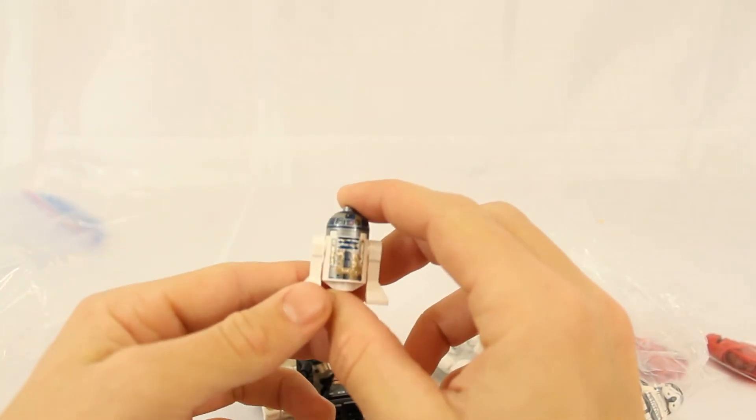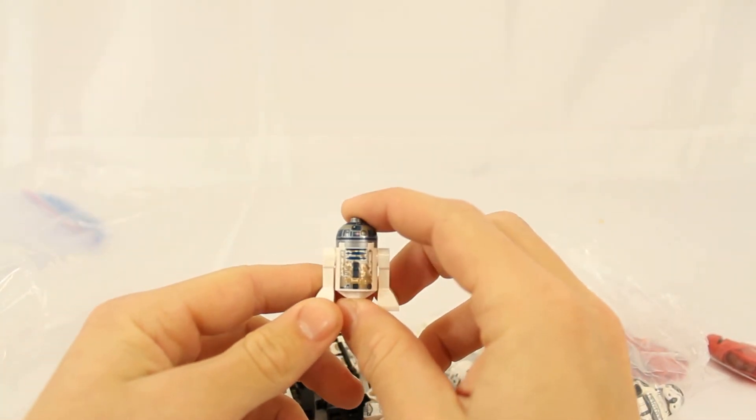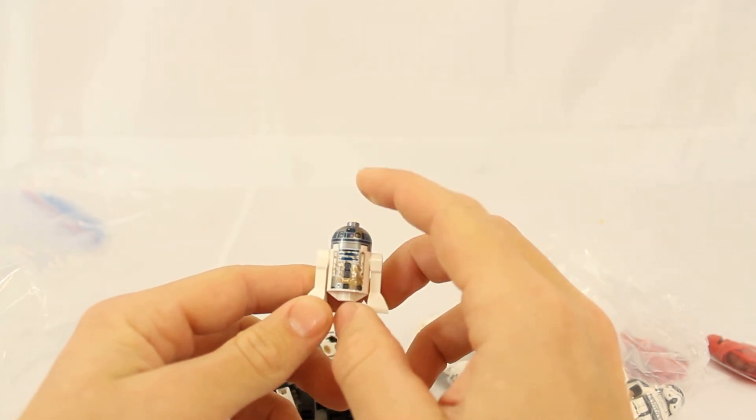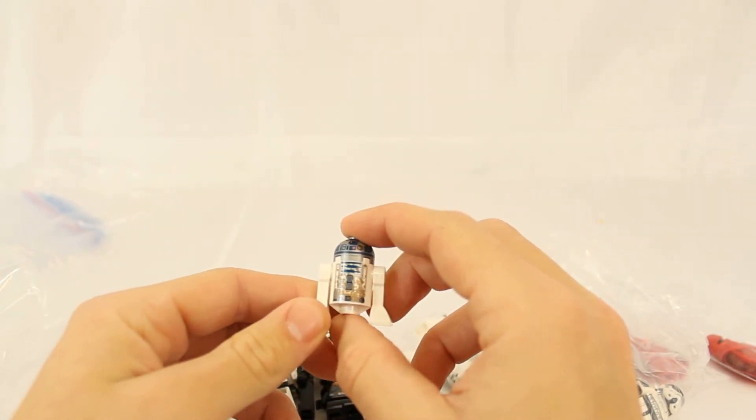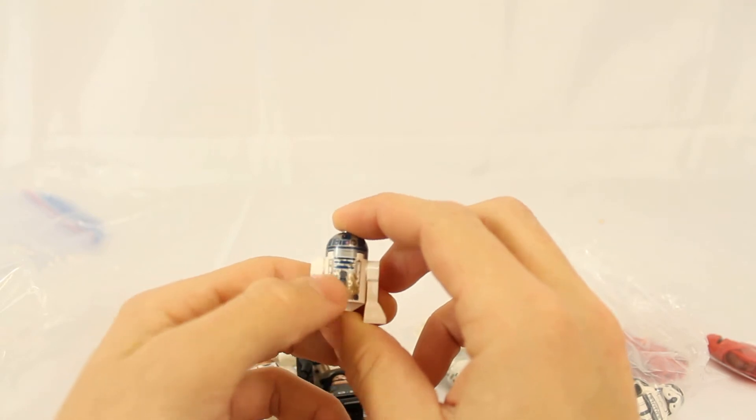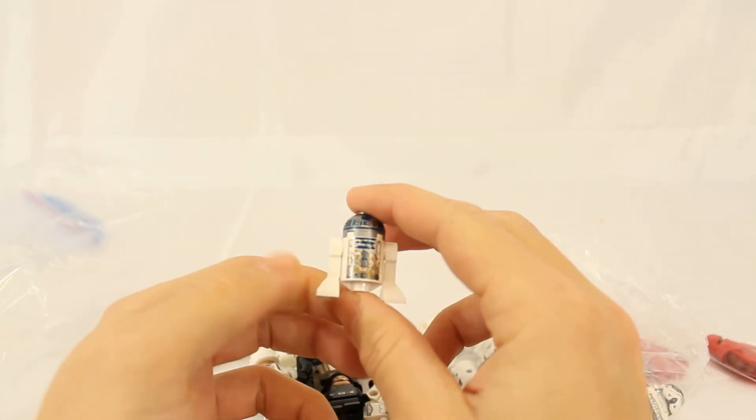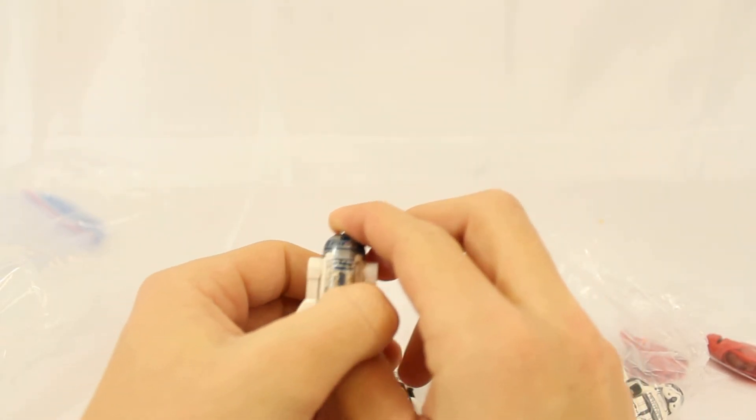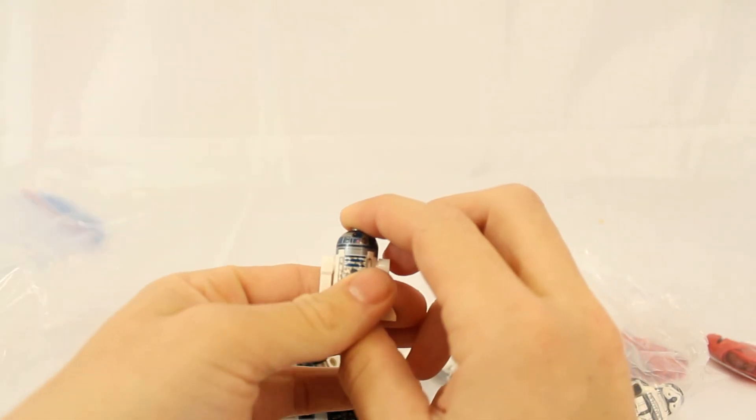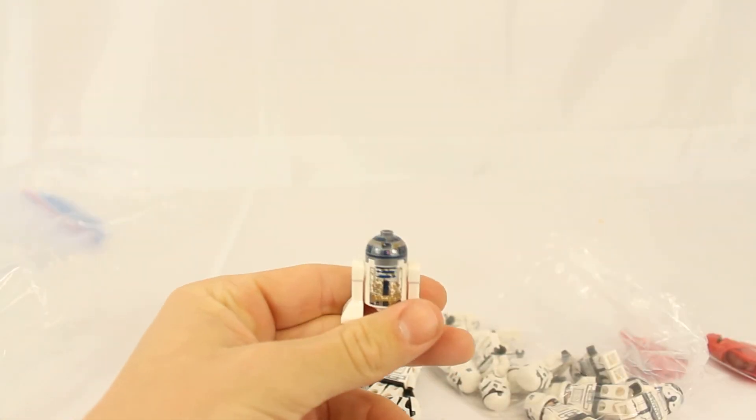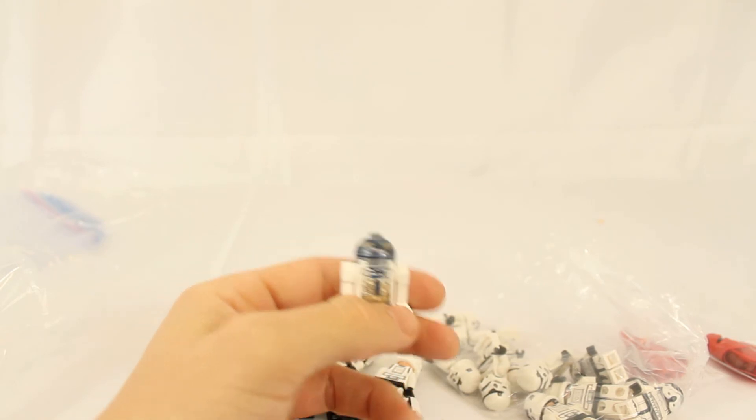And then the last one that I got was this little R2-D2 here. I think it's from Yoda's Hut set because he's got all the mud all over him. That's the reason I got him, because he has all the mud and gunk all over him. I thought that was kind of cool. Yeah, another astromech droid for my collection.